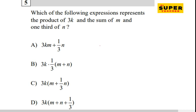So first of all, let's find out the sum of m and one third of n. This is a bit tricky, right? Sum of m and one third of n, so that's m plus one third of n, so that's one over three n.